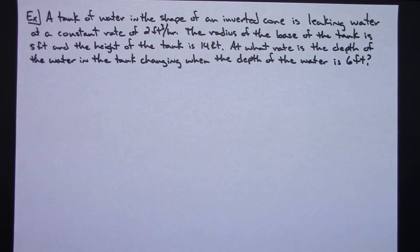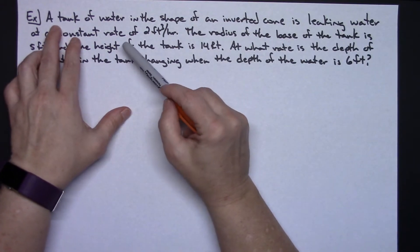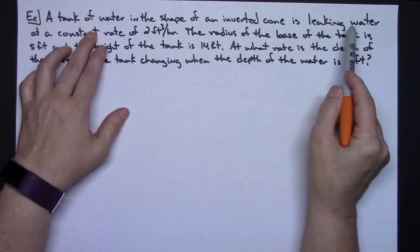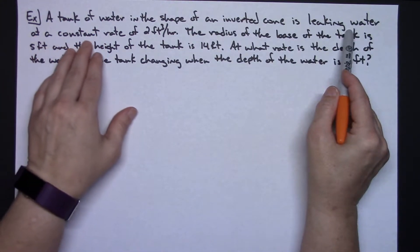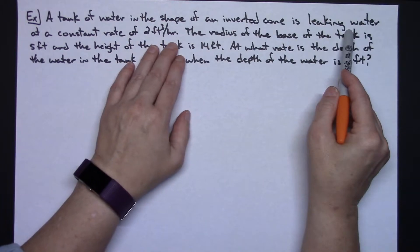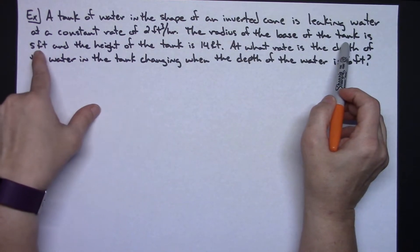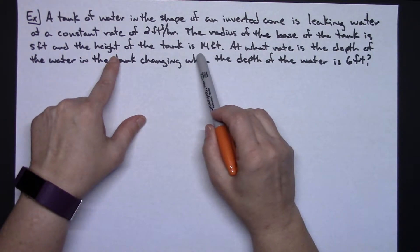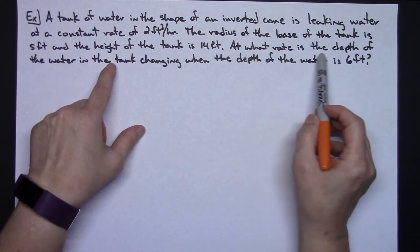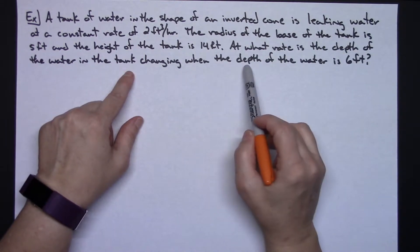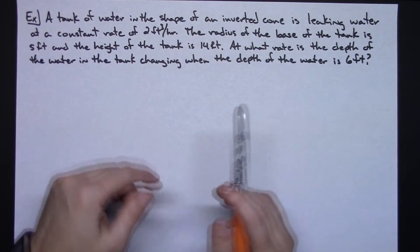In this example we're going to be looking at a cone problem. A tank of water in the shape of an inverted cone is leaking water at a constant rate of 2 cubic feet per hour. The radius of the base of the tank is 5 feet and the height of the tank is 14 feet. At what rate is the depth of the water in the tank changing when the depth of the water is at 6 feet?